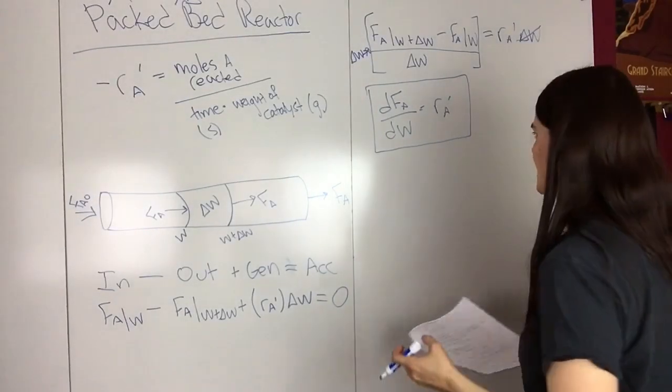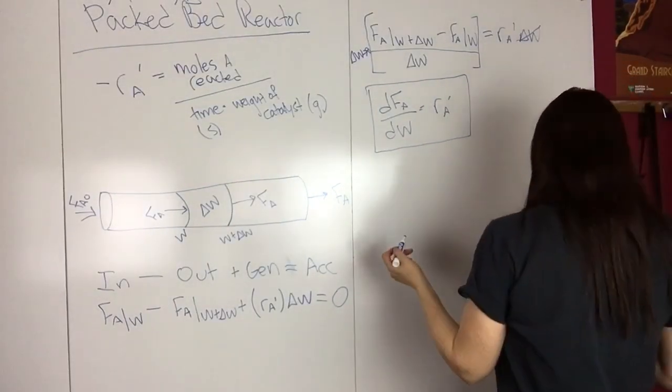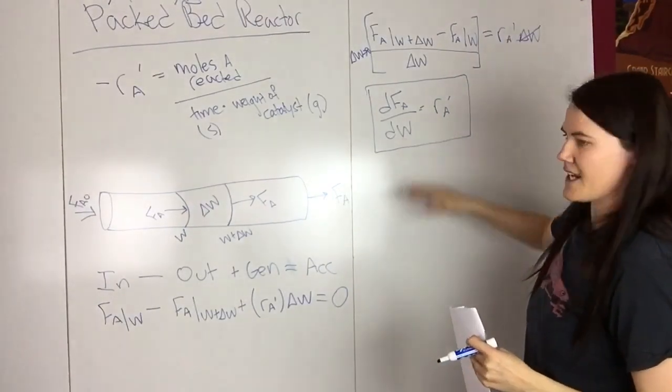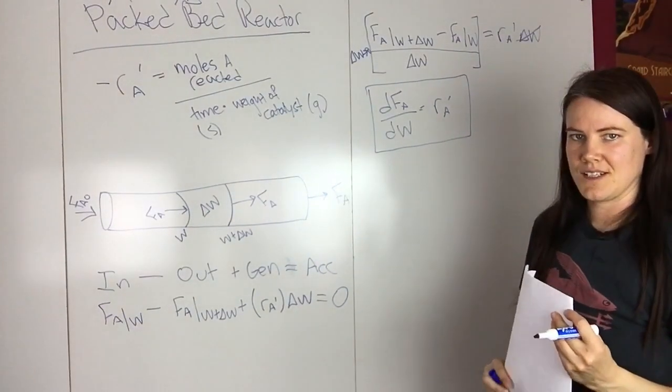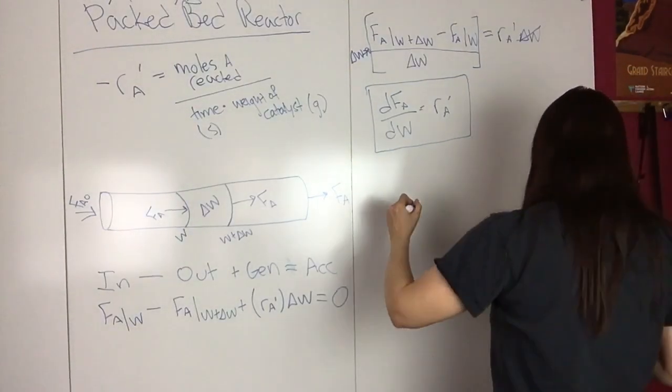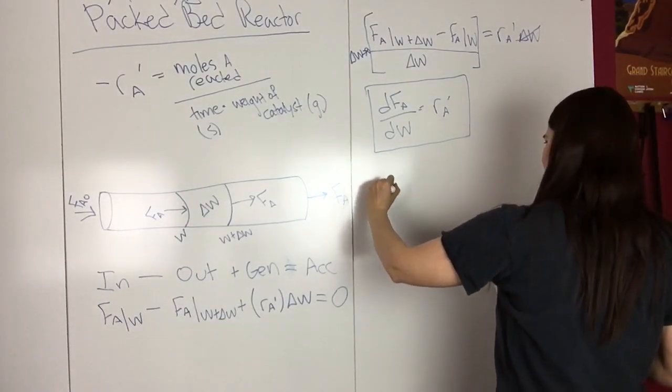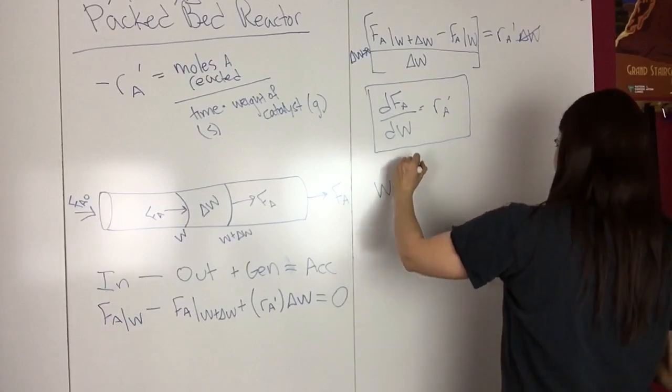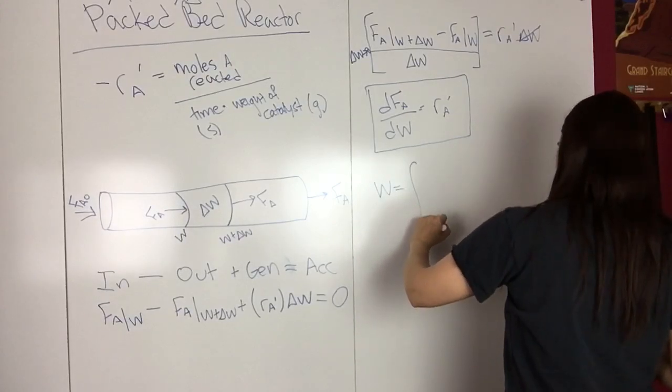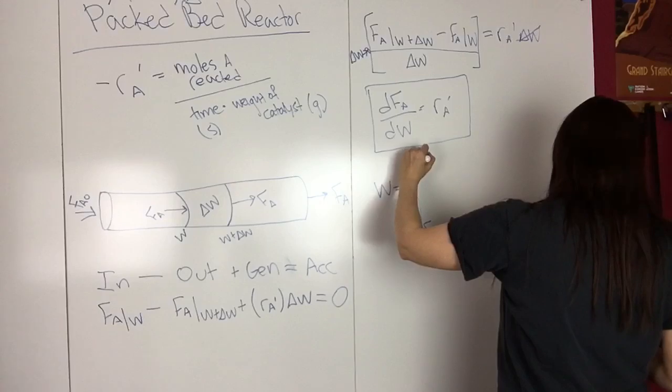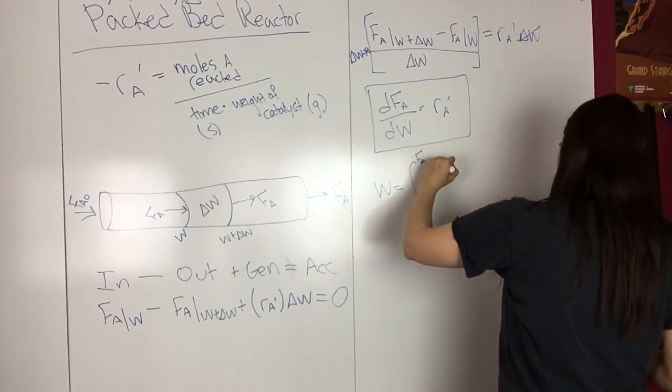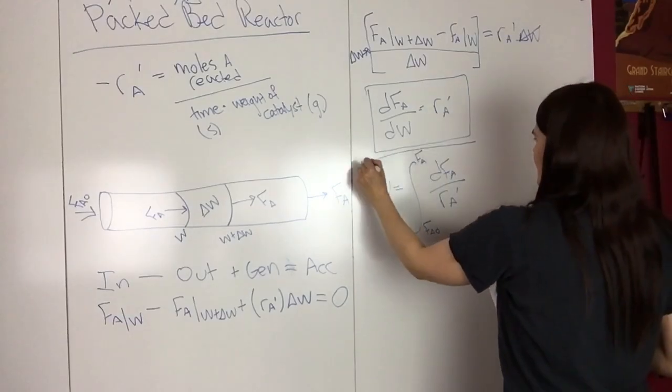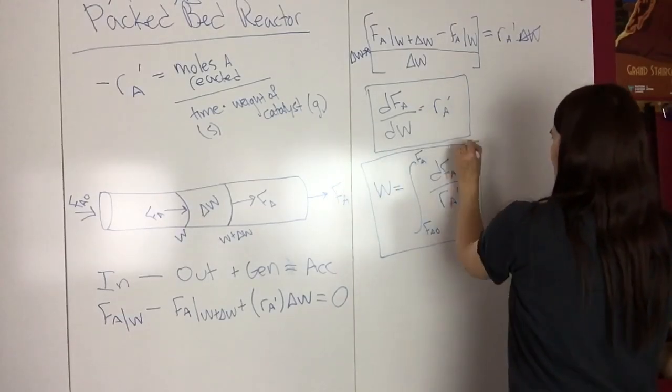And this can be rearranged and rewritten, so a lot of times what you want to calculate is the weight, so it's easier to use the integral form. So rewriting it in the integral form, you have W equals the integral from F_A naught to F_A of dF_A over R_A prime.